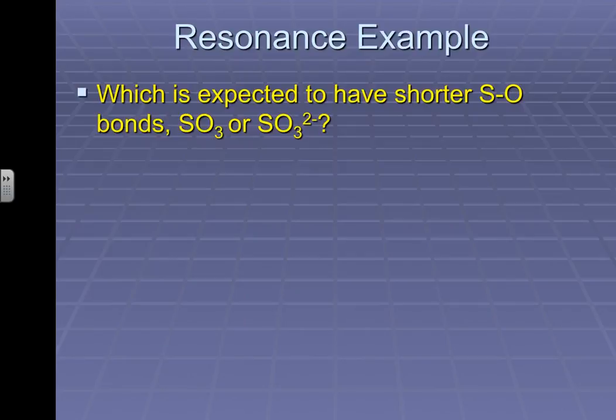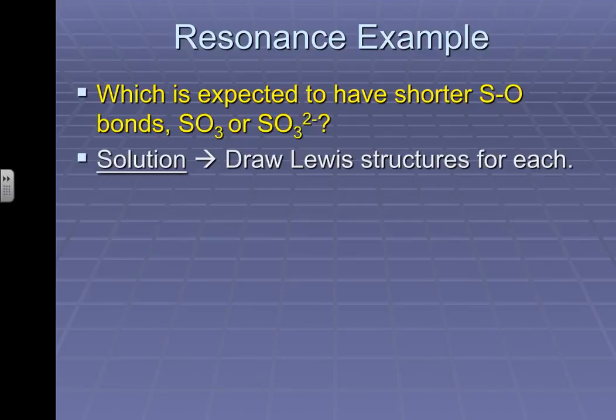To do a quick example, what I would ask is a question maybe such as this. You might even notice it doesn't even specifically say, hey, draw a Lewis structure. It says, what is expected to have a shorter sulfur-oxygen bond, SO3 or SO3 2-? So we're talking about sulfur trioxide or the sulfite ion. What that's going to require you to do to determine bond length is to actually draw the Lewis structures for each. So what I would ask you to do at this moment is please pause the video. Please draw the Lewis structures, again, thinking about maybe resonance here, and then I will show you the answer in just one second.